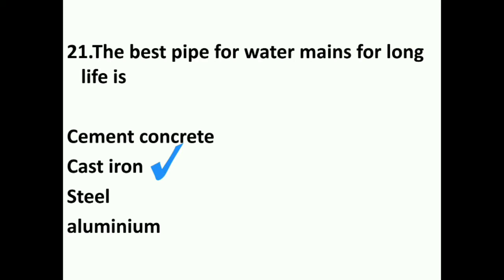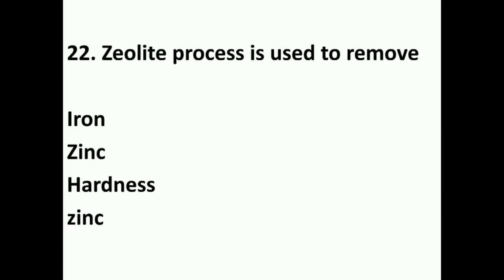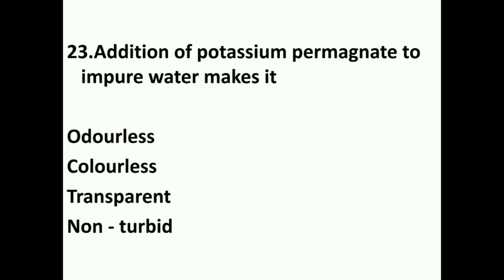Cast iron pipes have a lifespan of about 100 years. The zeolite process is used to remove hardness — it is a hardness removal method. Addition of potassium permanganate to impure water makes it odorless; in small villages using well water, potassium permanganate is used as a chemical treatment.